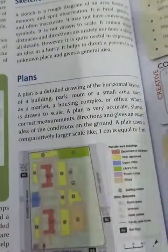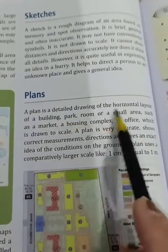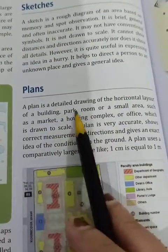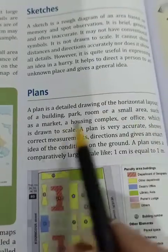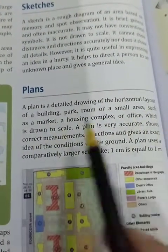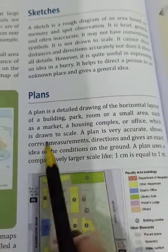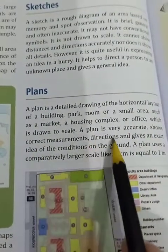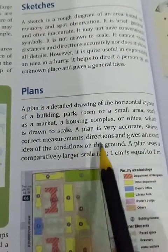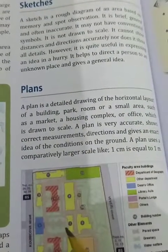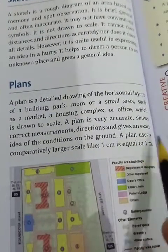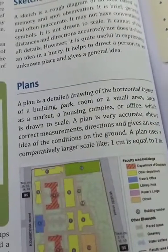The next and last heading is Plans. A plan is a detailed drawing of the horizontal layout of a building, park, room, or small area such as a market, house complex, or office. It is drawn to a scale and is very accurate, showing the correct measurements, direction, and giving an exact idea of the condition of the ground.